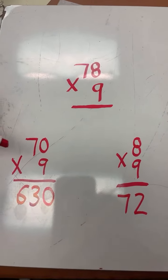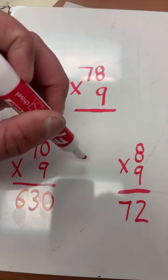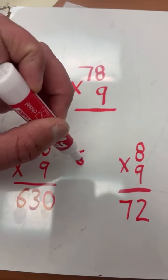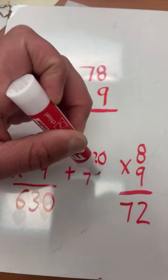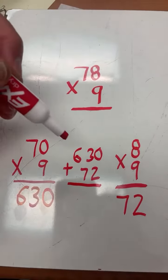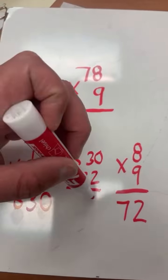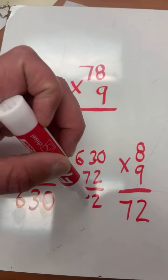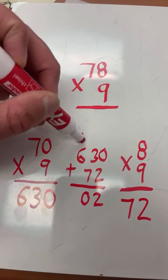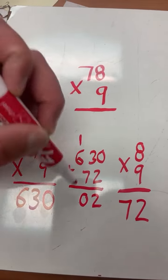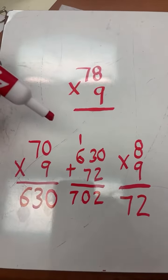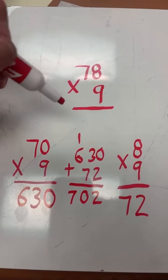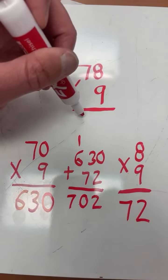2 plus 0 equals 2. 3 plus 7 equals 10. 0, carry the 1. 1 plus 6 equals 7. And we have our final answer: 78 times 9 equals 702.